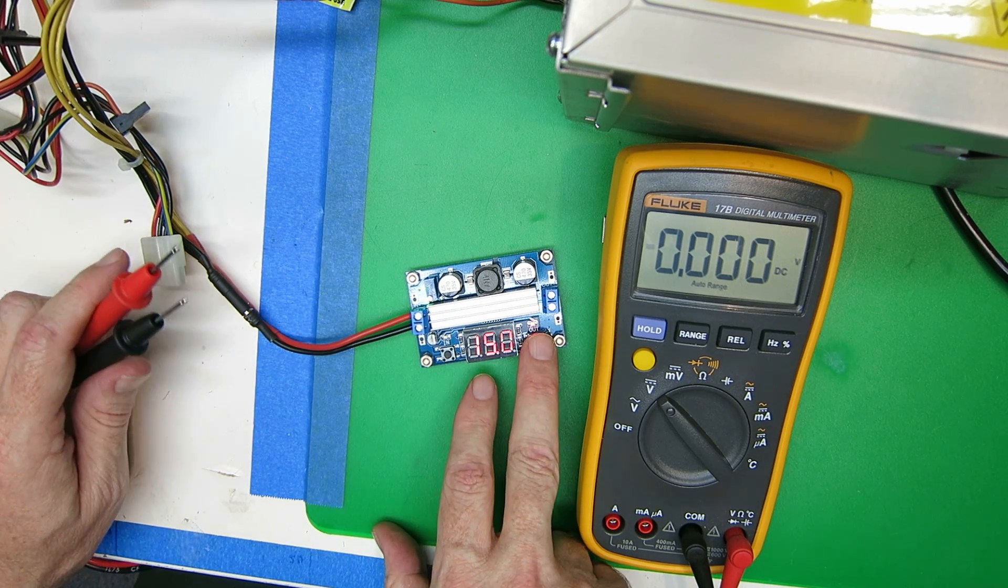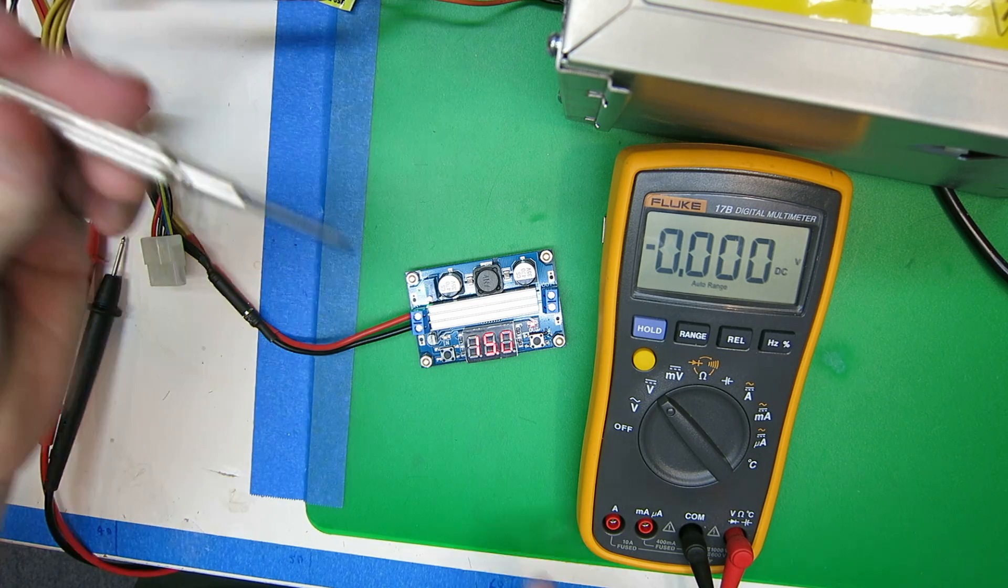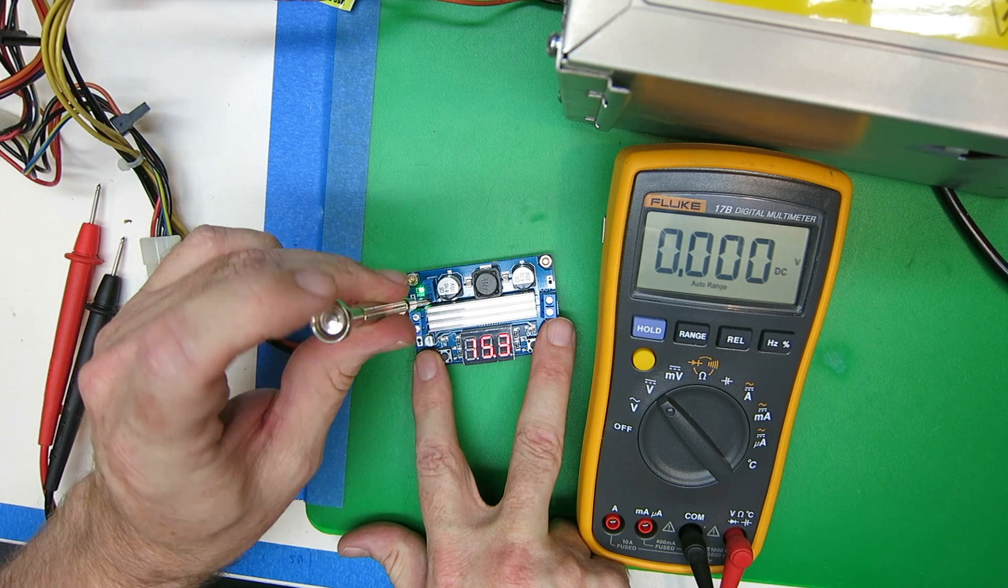And then on the output, you can see it's 15 volts. How you change that is you can just dial it in on this potentiometer.